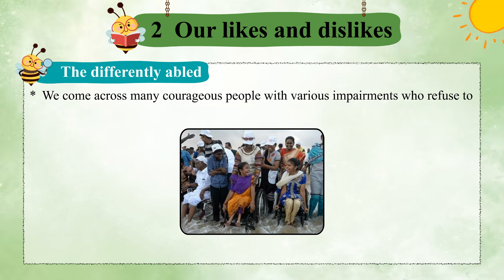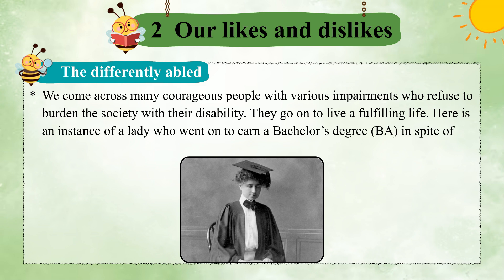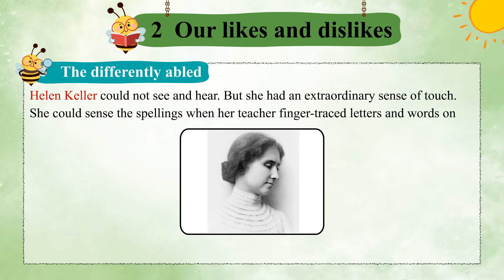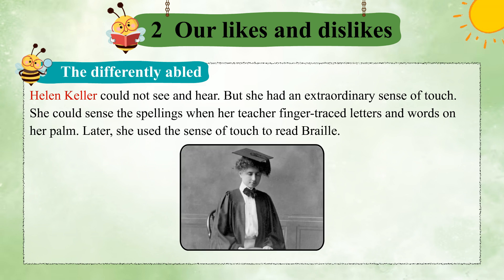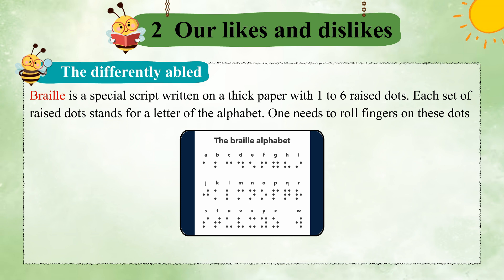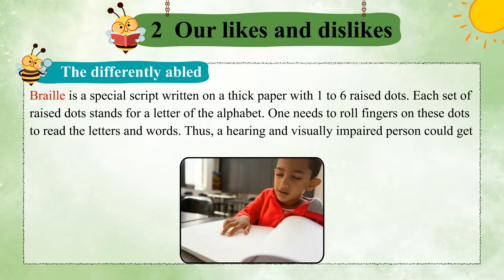We come across many courageous people with various impairments who refuse to burden the society with their disability and go on to live a fulfilling life. Helen Keller could not see and hear, but she had an extraordinary sense of touch. She could sense the spellings when her teacher finger-traced letters and words on her palm. Later, she used the sense of touch to read Braille. Braille is a special script written on thick paper with one to six raised dots. Each set of raised dots stands for a letter of the alphabet. One needs to roll fingers on these dots to read the letters and words. Thus, a hearing and visually impaired person could get education with the help of Braille.